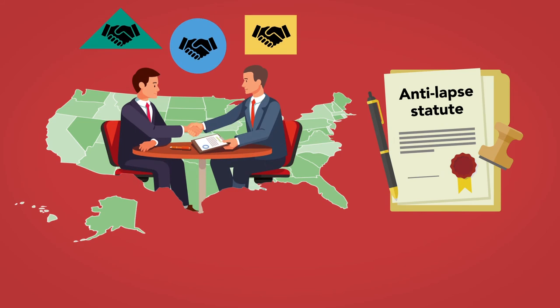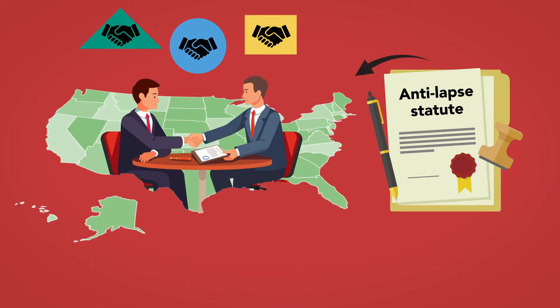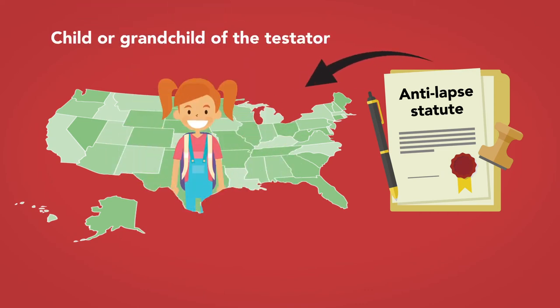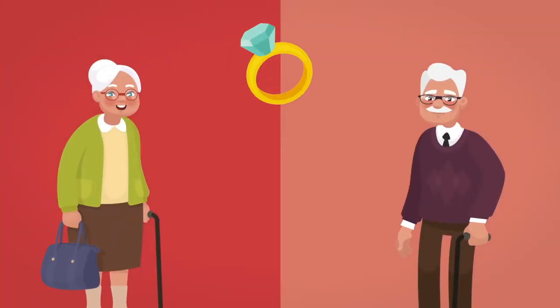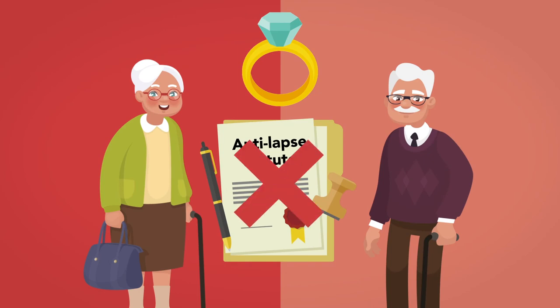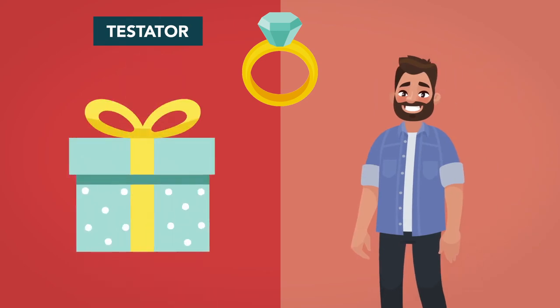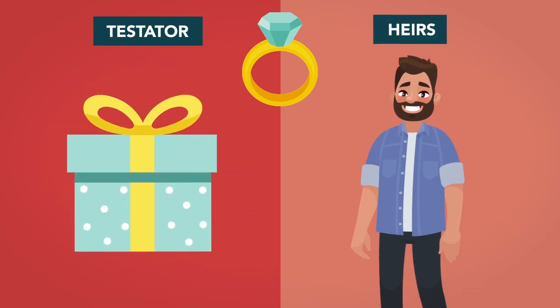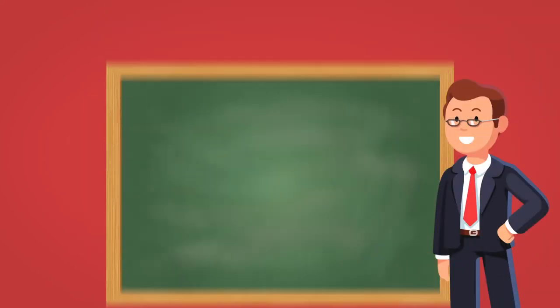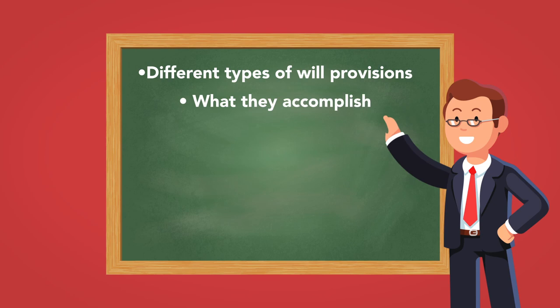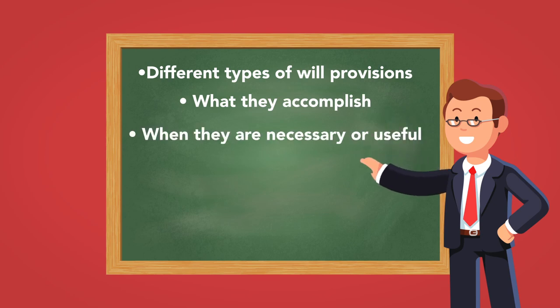All states have passed anti-lapse statutes, although they differ in the relationship between the testator and beneficiary that they require. While some states apply anti-lapse only when the beneficiary is a child or grandchild of the testator, some provide for anti-lapse even when they are less closely related. Note that bequests to spouses are not subject to anti-lapse statutes. If the spouse pre-deceases the testator, then the gift to the spouse fails and the gift goes to the testator's heirs, who are often heirs to the beneficiary spouse as well in any case. Our next module will discuss many types of will provisions, what they accomplish, and when they are necessary or useful.